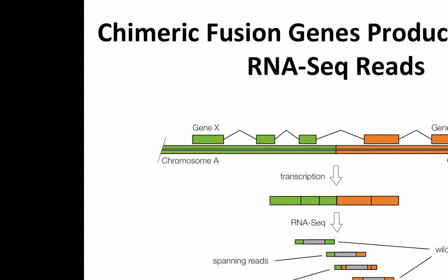We have a collection of reads, some of which may come from fusion transcripts. We can classify the types of reads that come from a fusion transcript: we get wild-type reads that appear to come from one gene or the other; spanning reads (or discordant reads) where one read maps entirely to one gene and another to a different gene; and split reads where the actual read itself is split by the fusion boundary. All three of these are evidence for gene fusions.